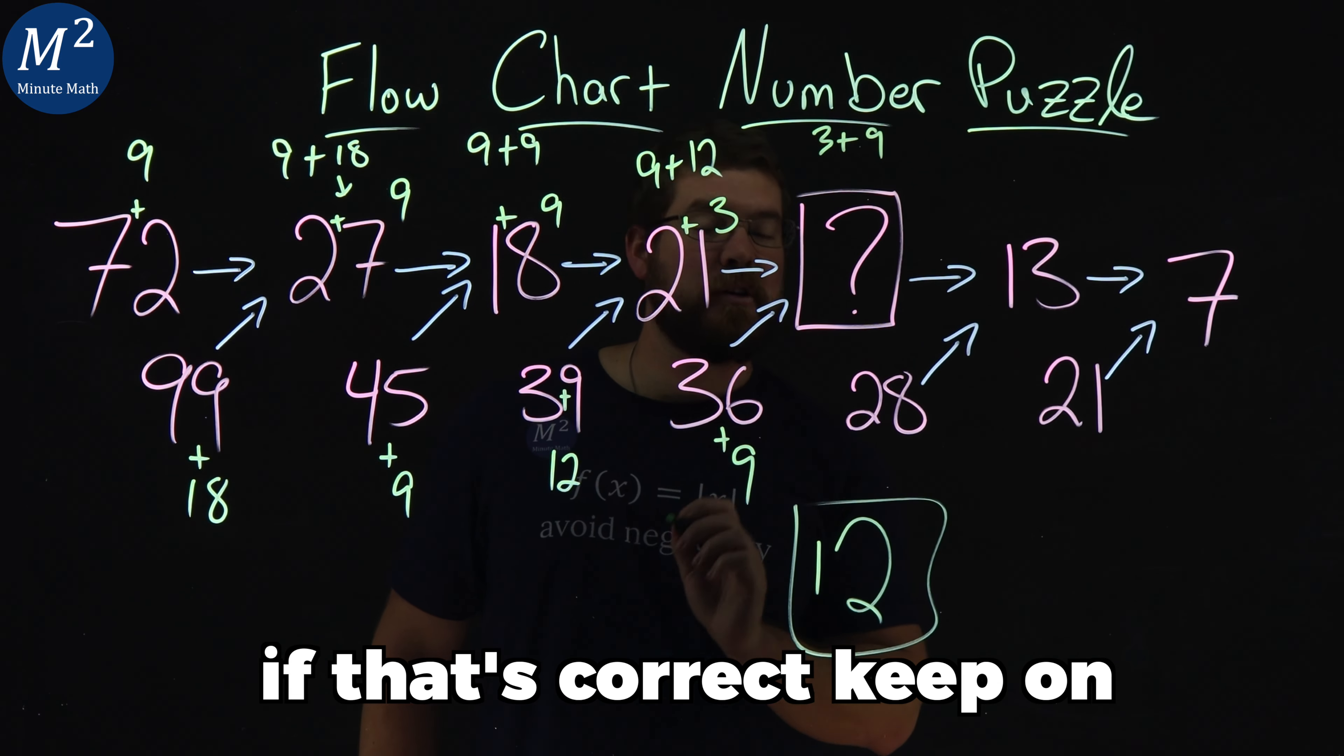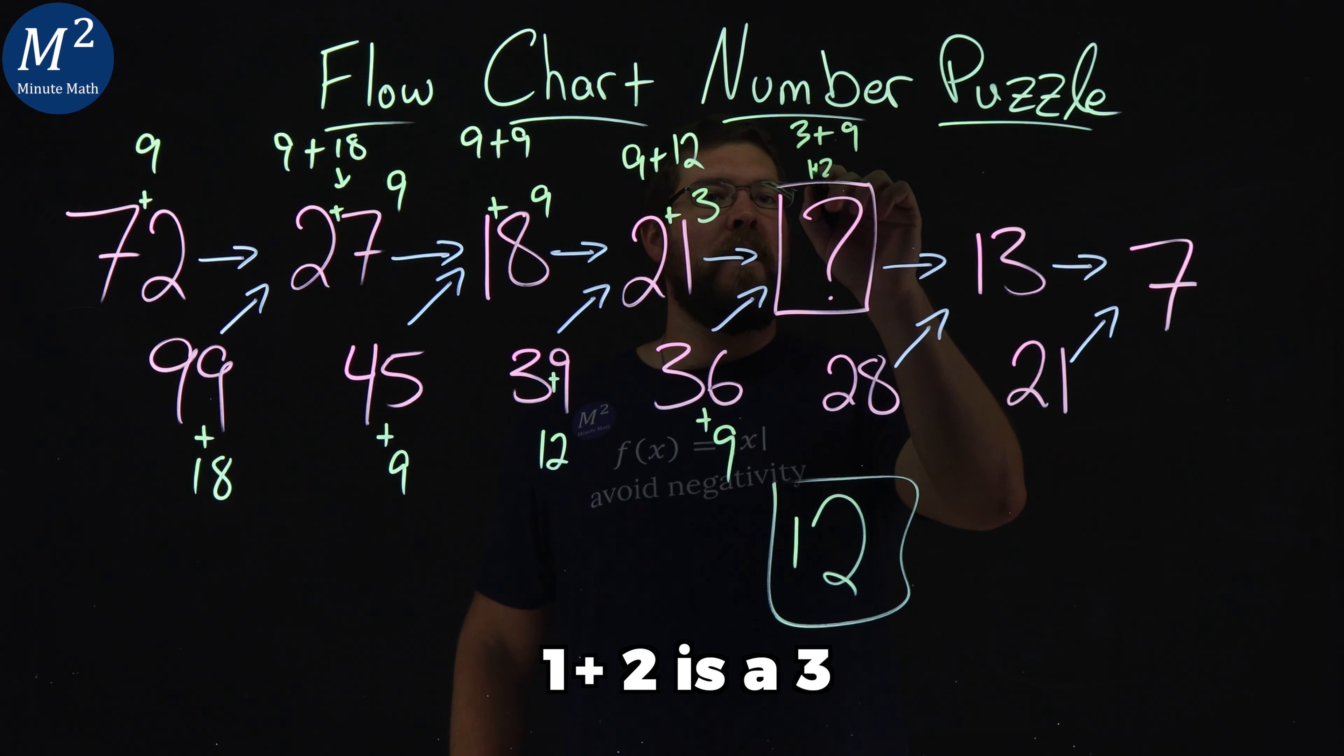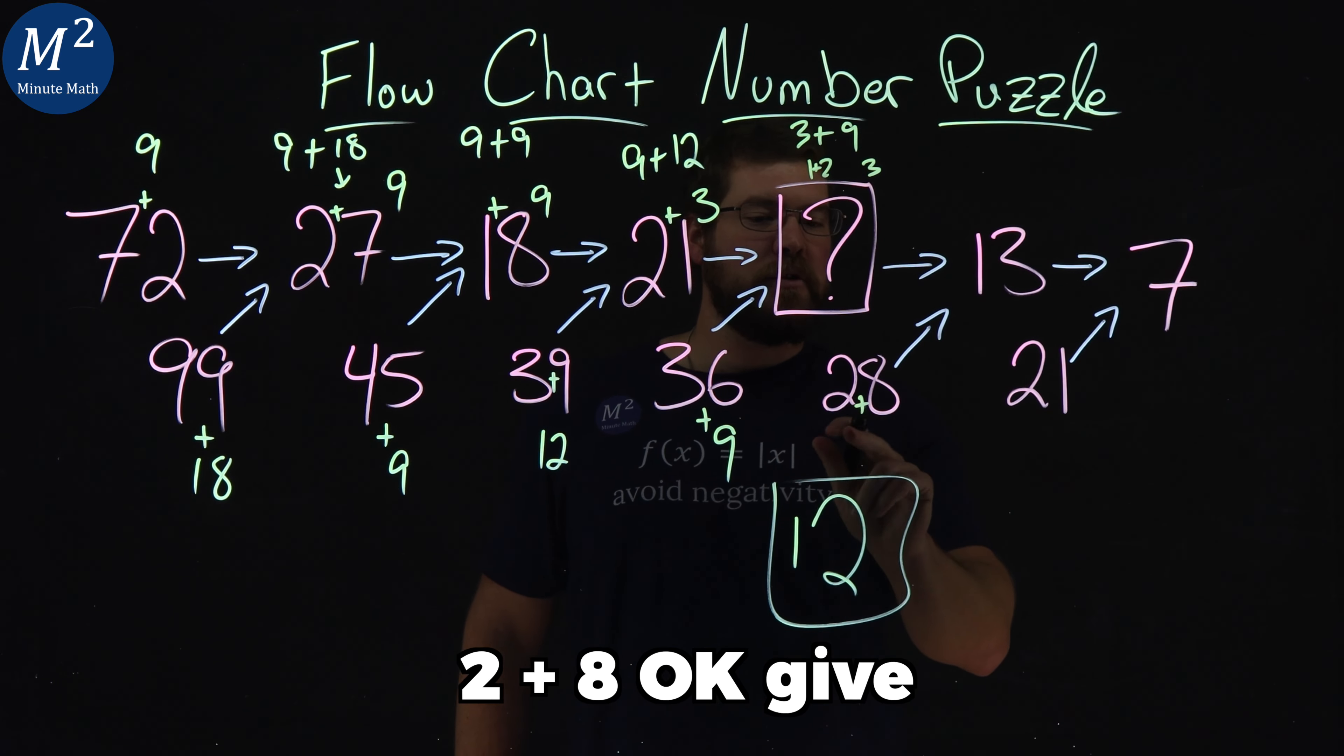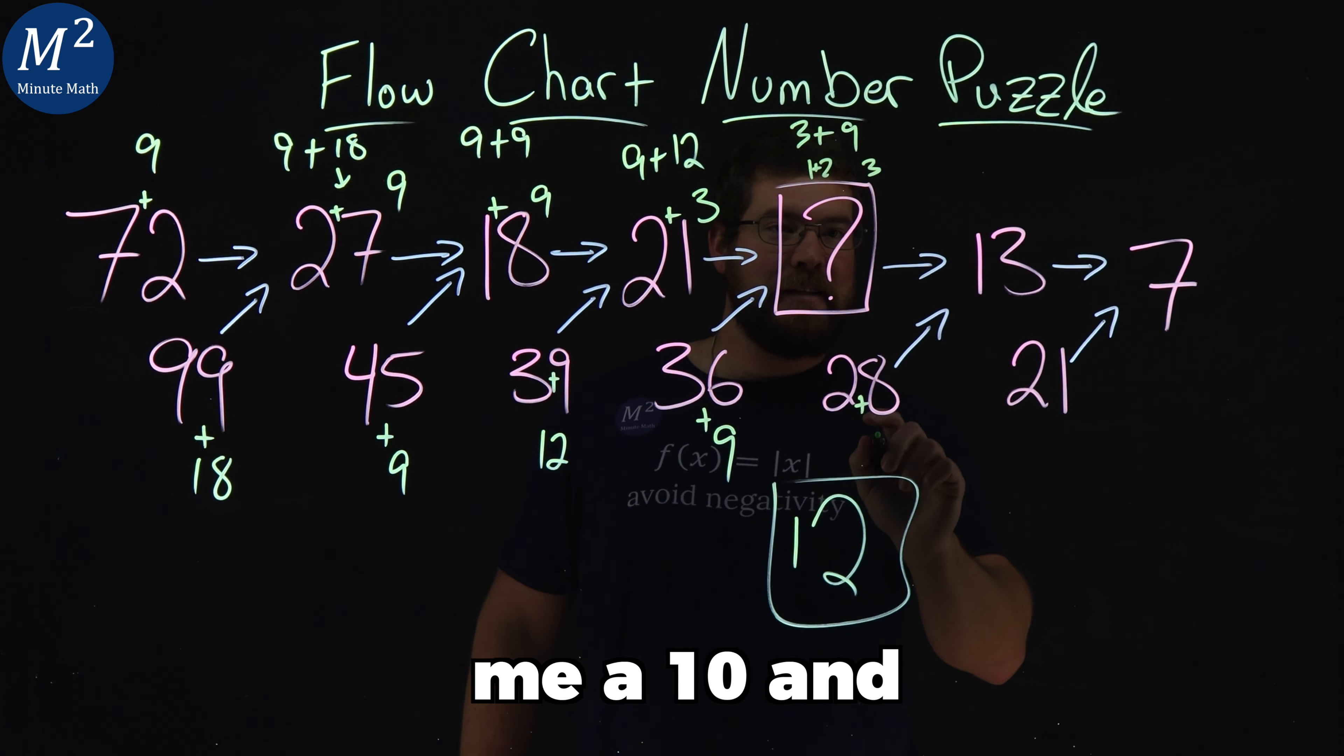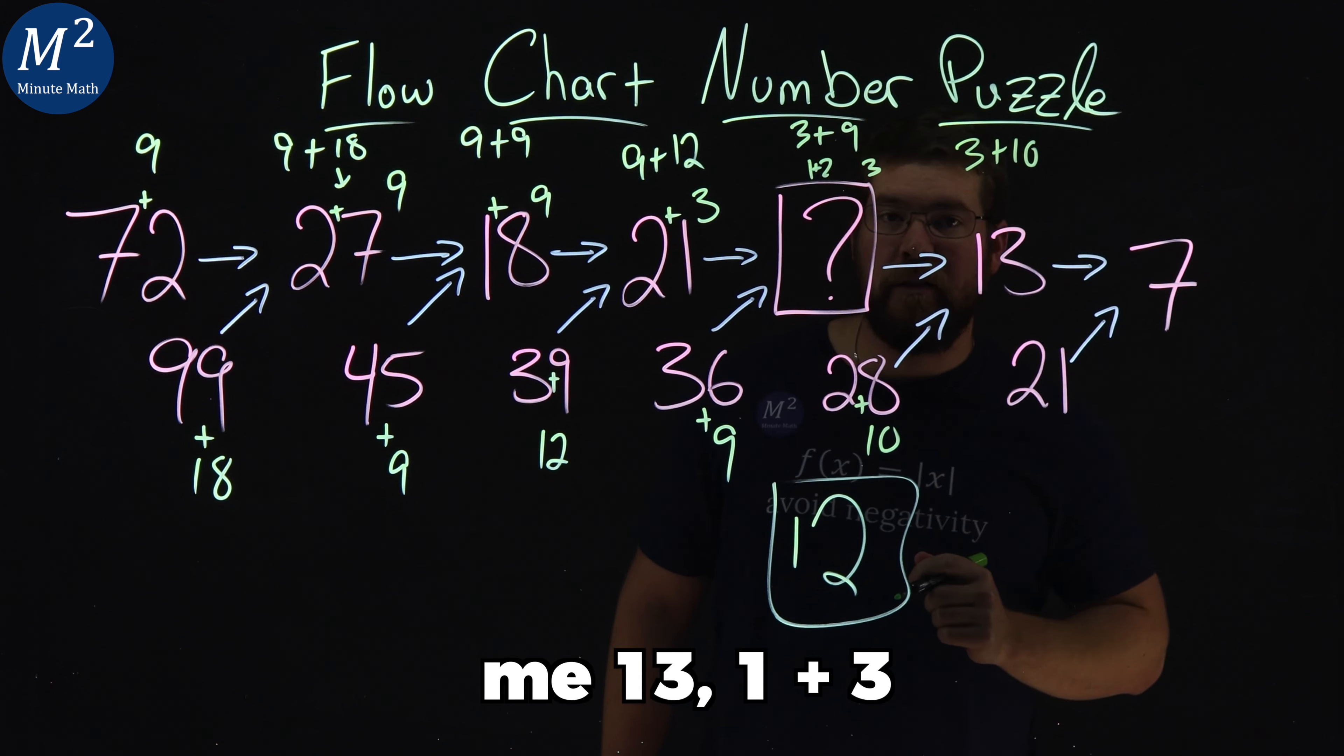Let's see if that's correct. Keep on going. Up here 12, so that's 1 plus 2 is a 3, 2 plus 8 gives me a 10. And 3 plus 10 does in fact give me 13.